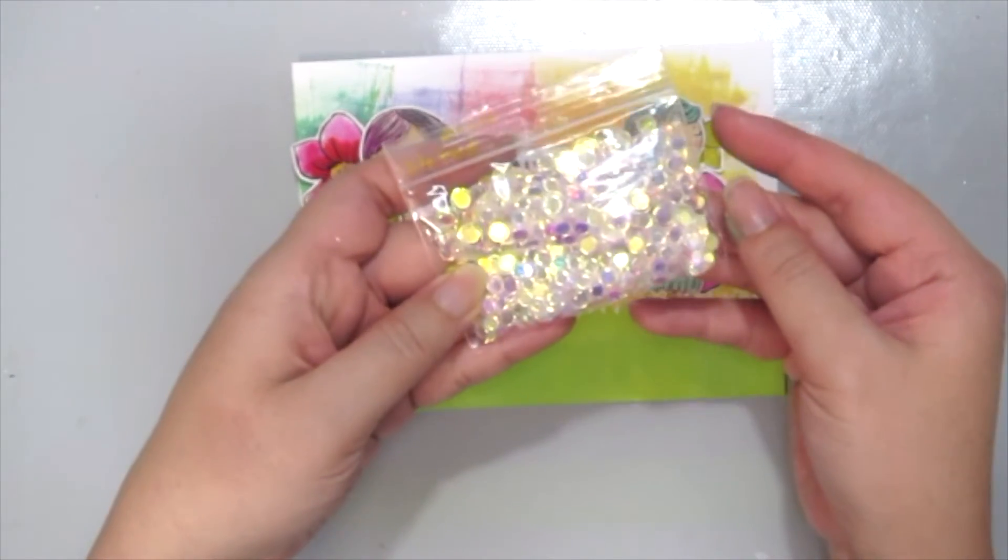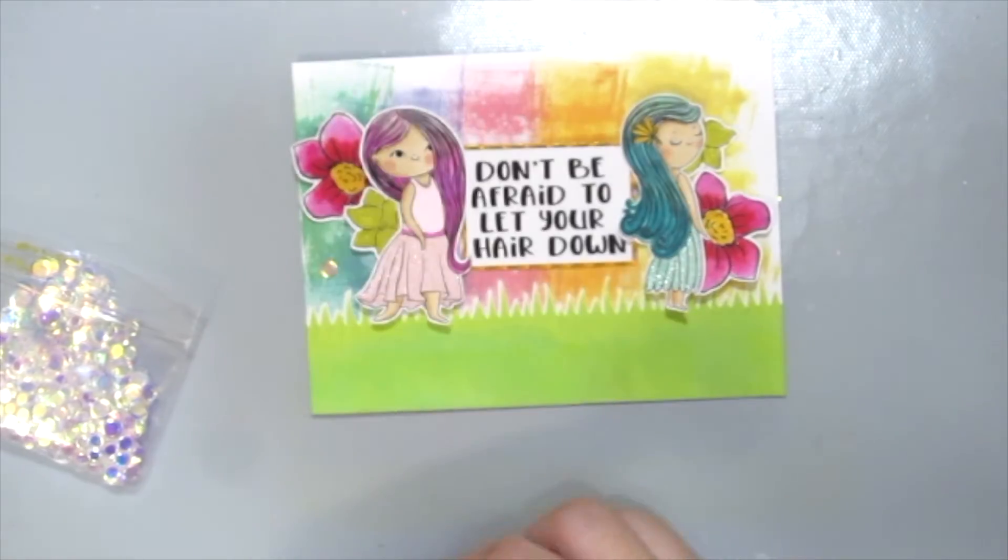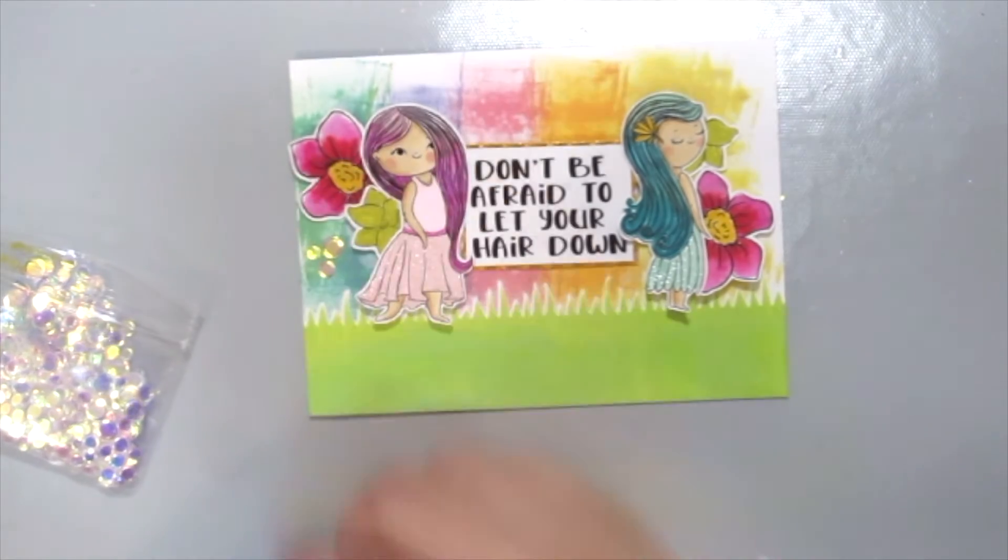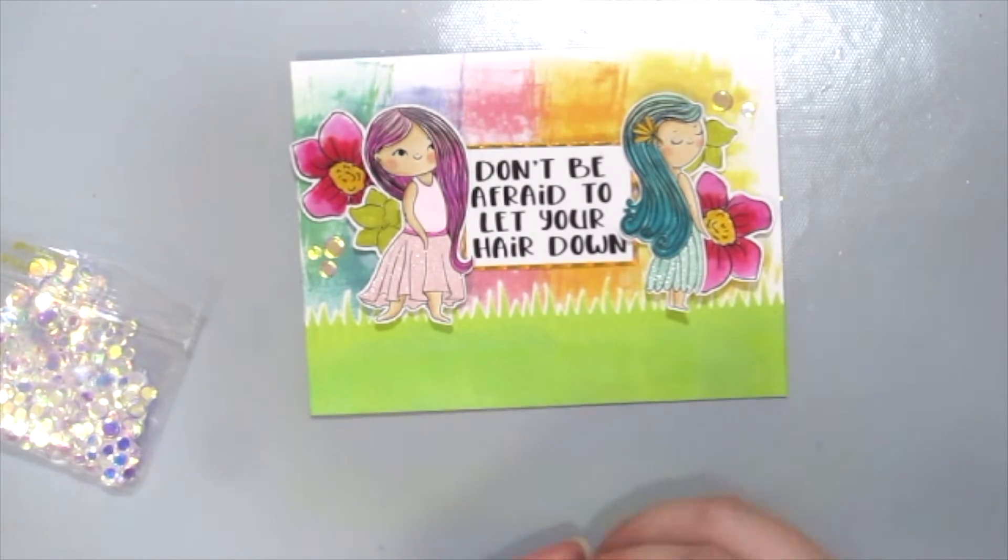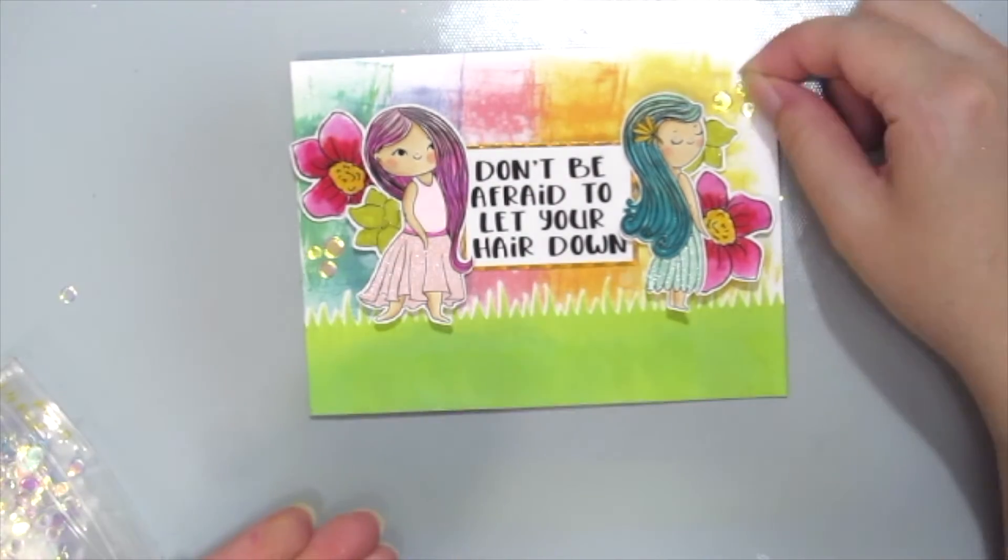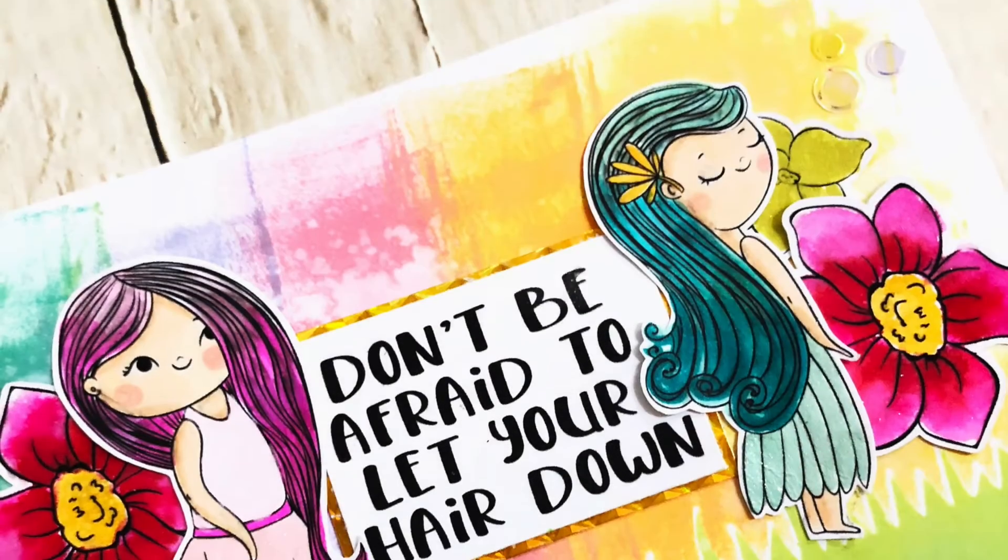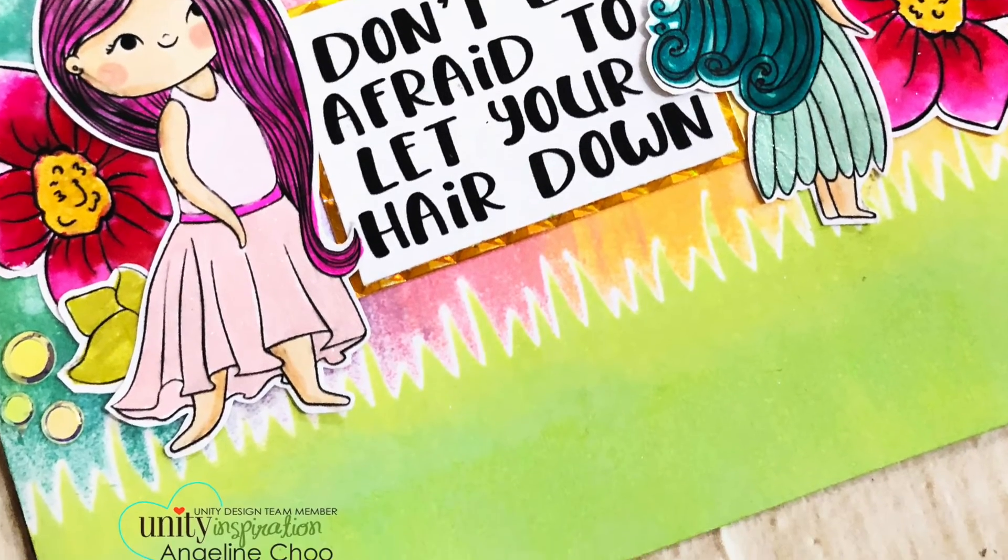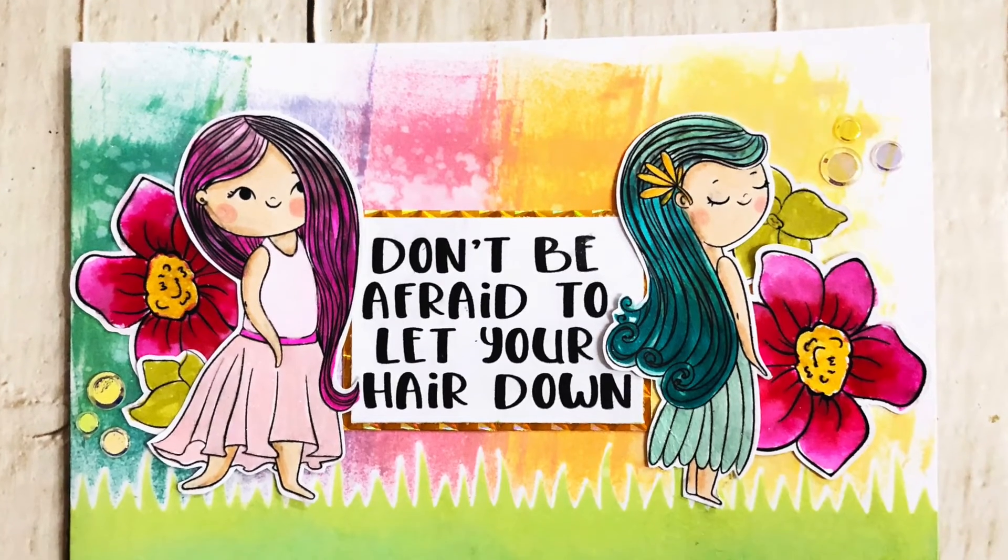I'm also grabbing the Unity Stamp Aurora Borealis sequins here to give it some extra bling to the card. So here is my finished card. I hope you enjoyed this quick tip technique, and thanks for watching!